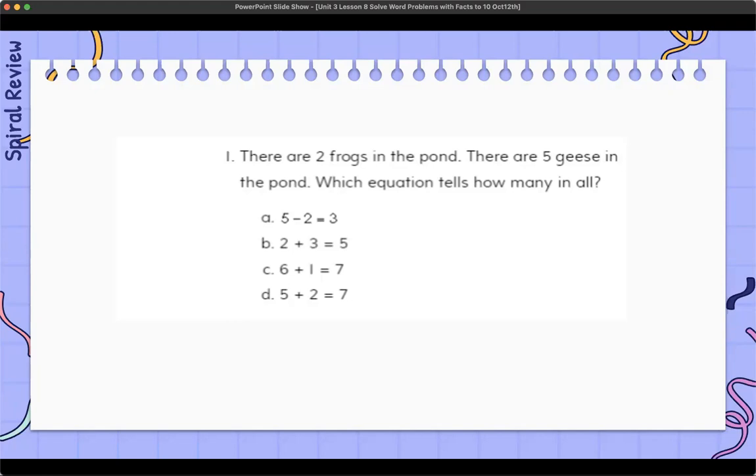Then we go on to the next part. There are five geese in the pond. So there's two frogs in the pond and there are five geese in the pond. How many geese are in the pond? What's the second number that's important? Have them write it down.